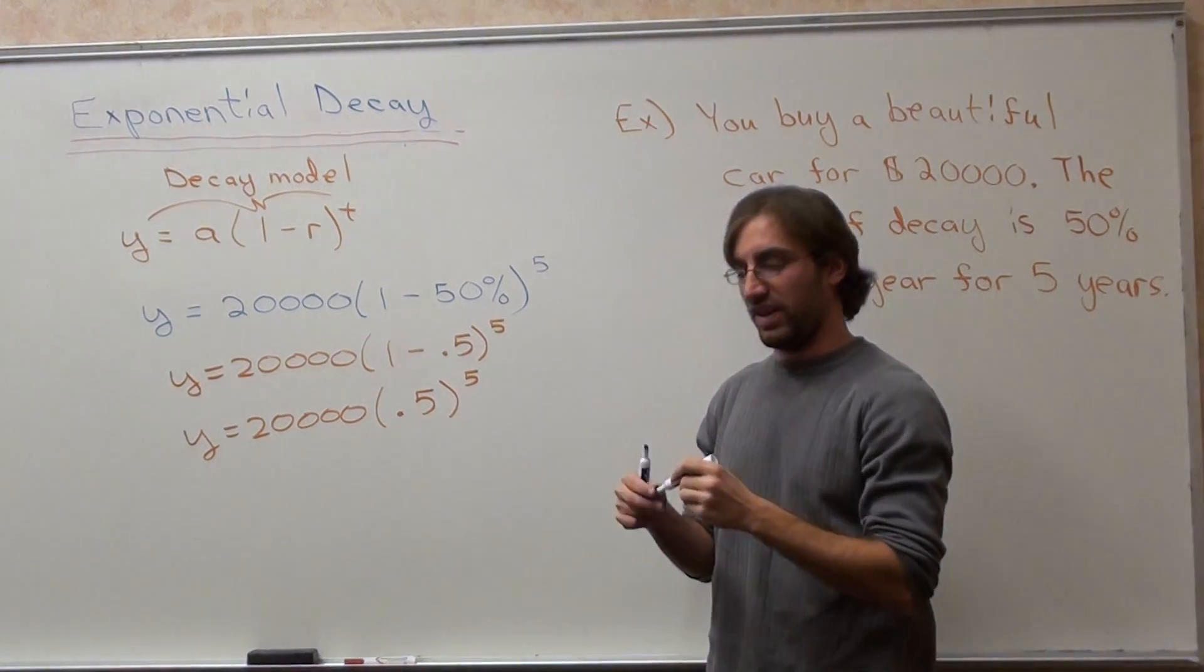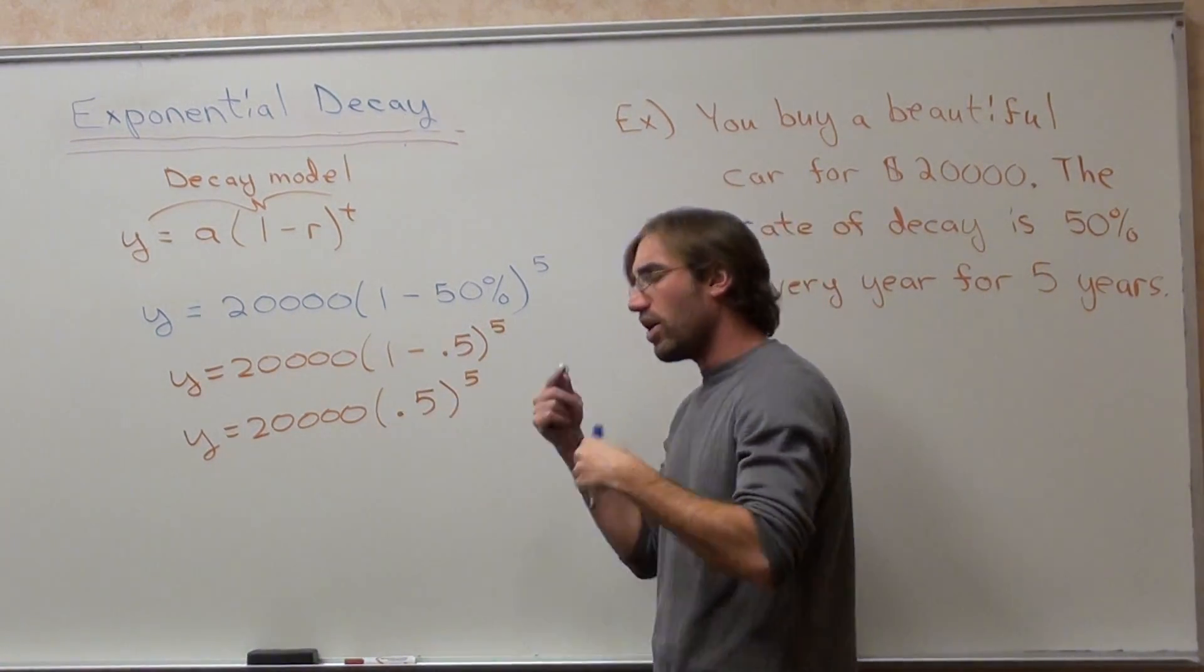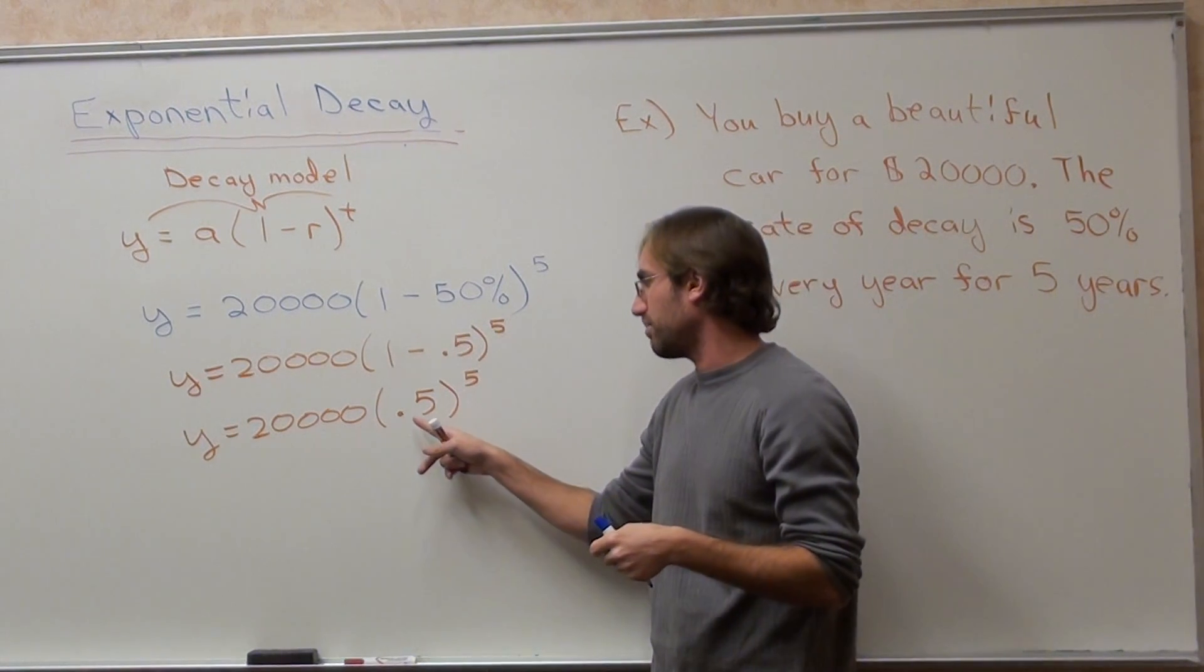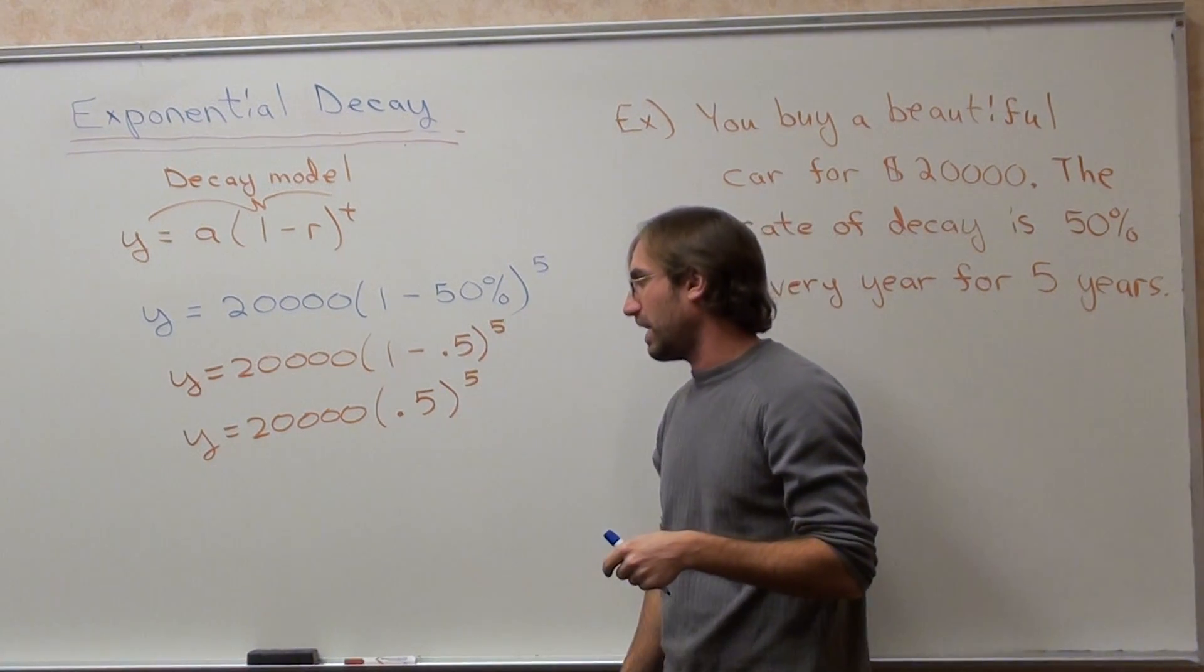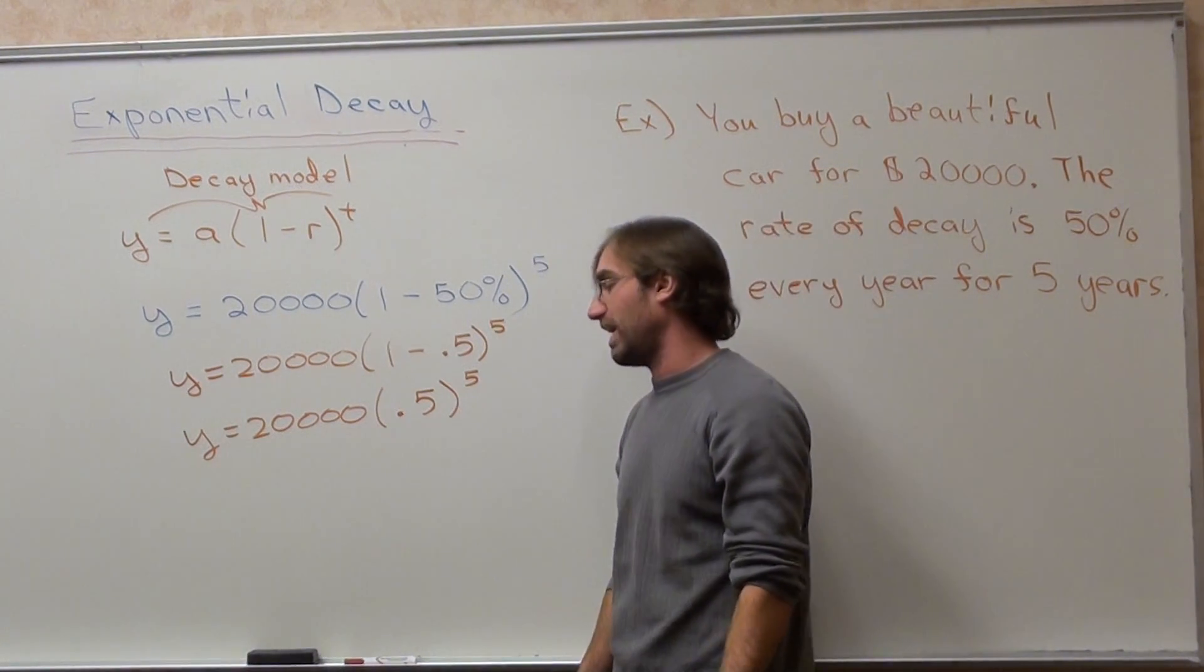1 subtract 0.5 is 0.5. And that 0.5 now is my decay factor. It's whatever this number is times this number. I go ahead and I substitute this really quickly into my head, 0.5 to the fifth power. To be honest, I really don't know what 0.5 to the fifth power is. I don't.